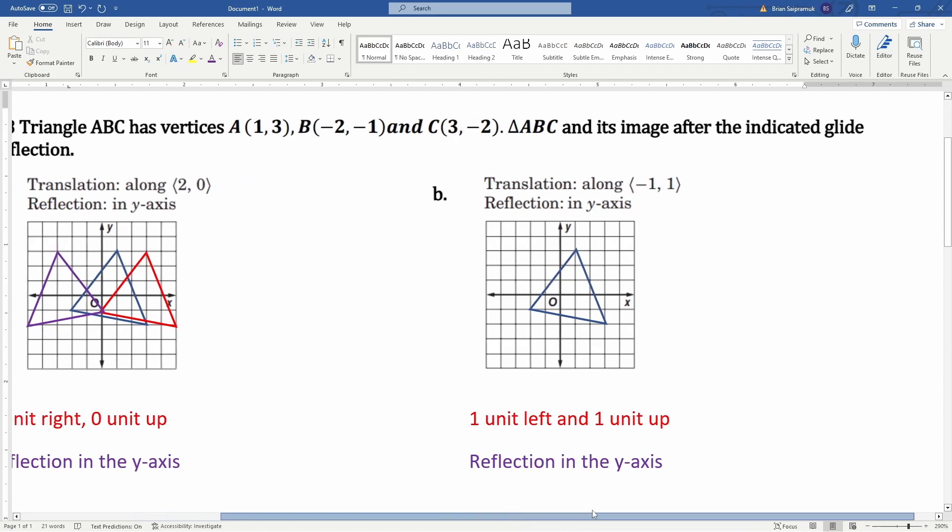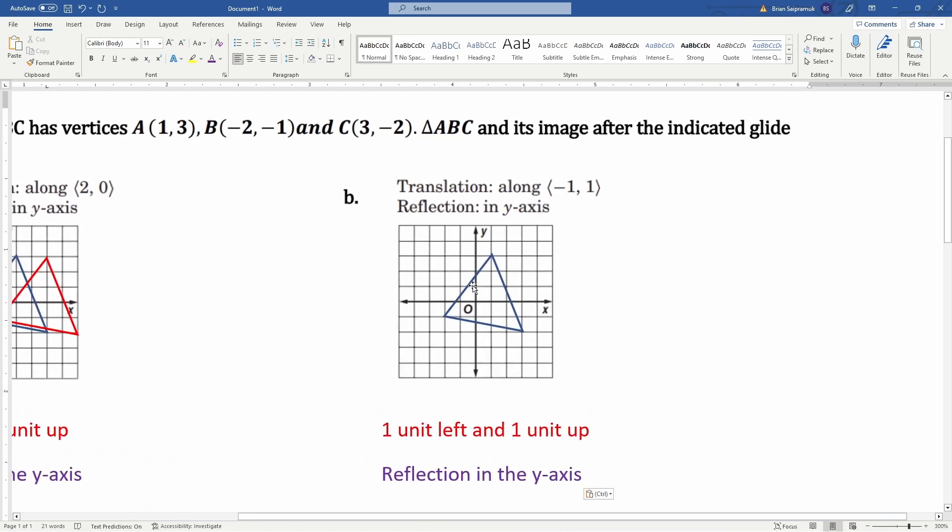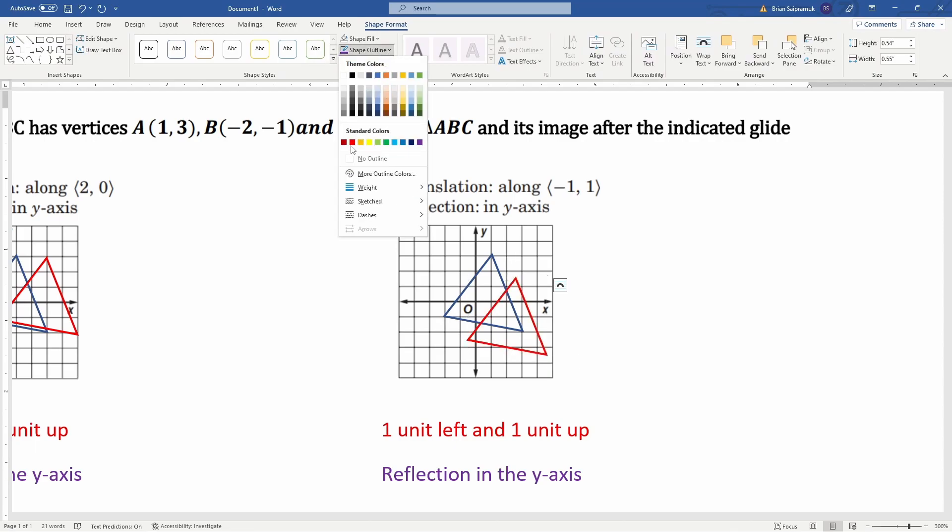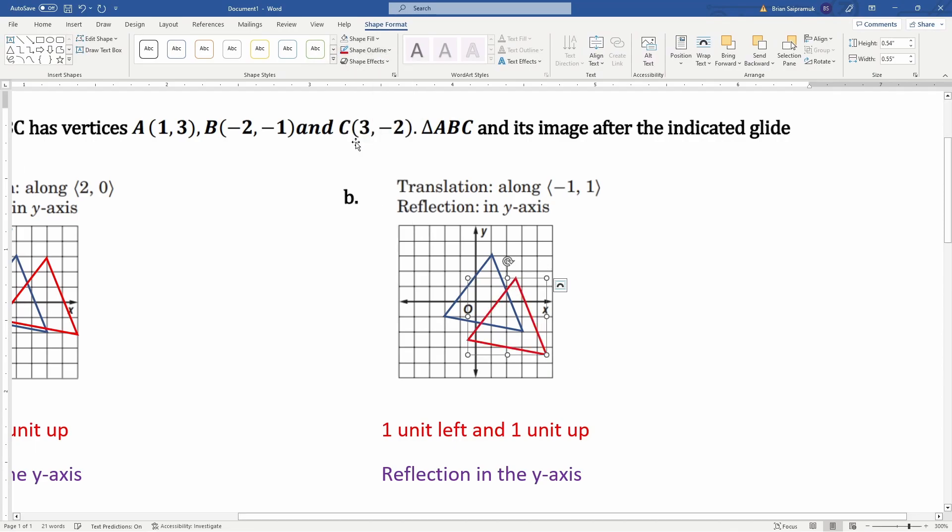Let's grab this, paste, make it red to indicate that we're going to do the translation. Here's the original. I'm just going to move one unit left, then one unit up. There you go.